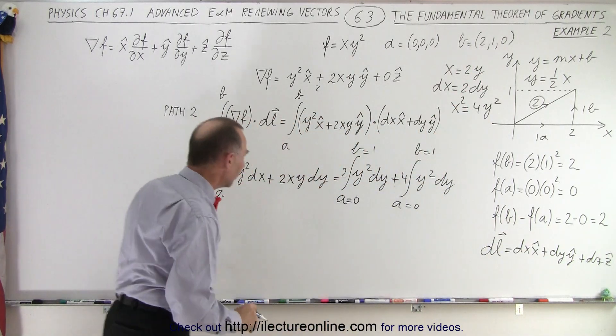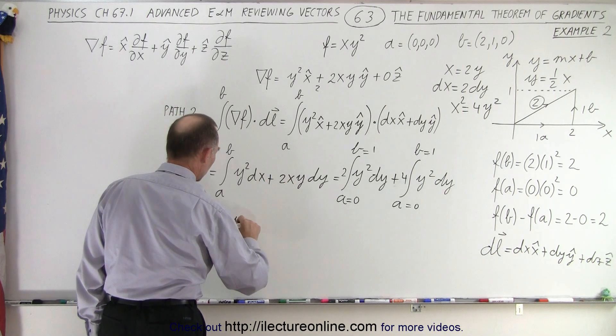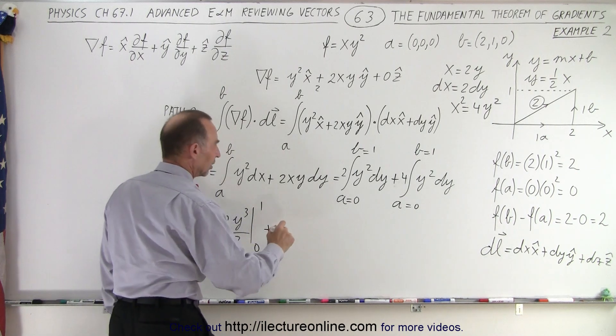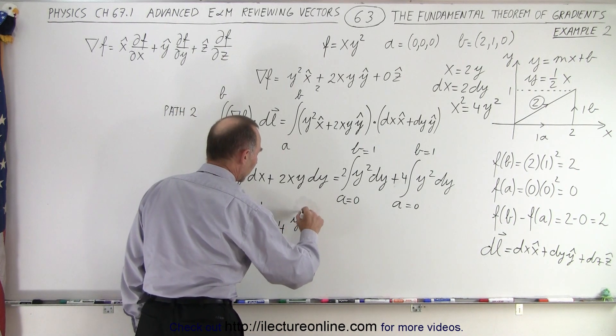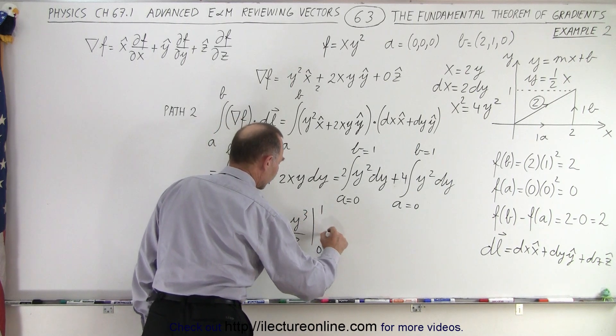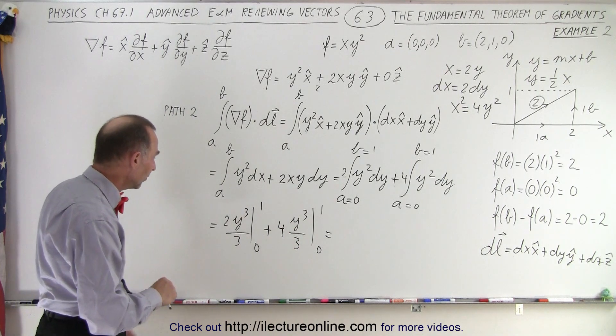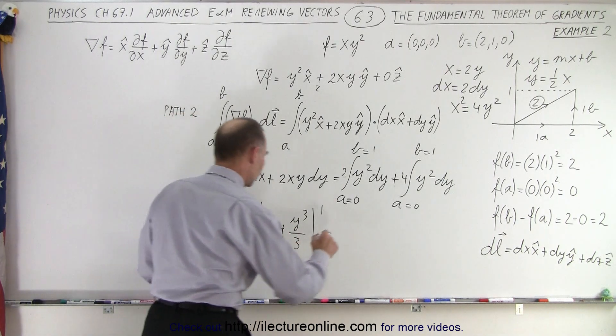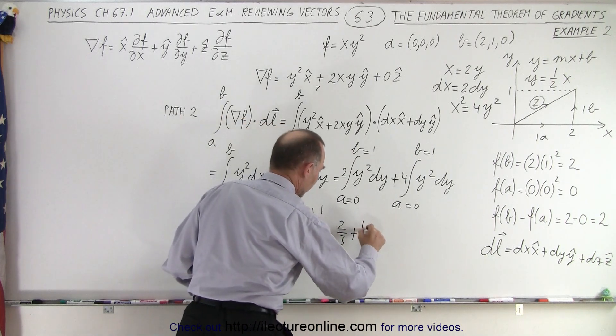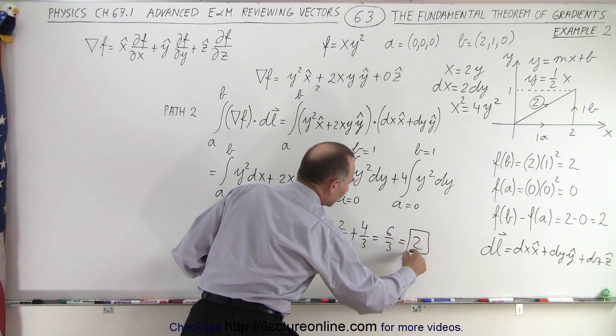All right, this is equal to the first integral would be 2y cubed over 3 evaluated from 0 to 1, plus the second integral will be 4y cubed over 3 and again from 0 to 1. When I plug in the lower limits of course I get nothing. When I plug in the upper limits I get 2 thirds plus 4 thirds which is equal to 6 thirds which is equal to 2.